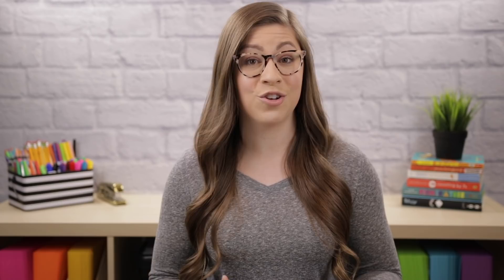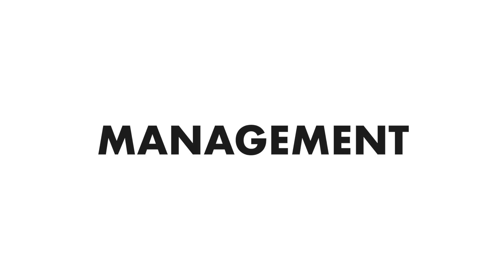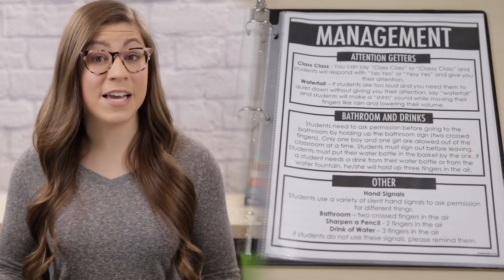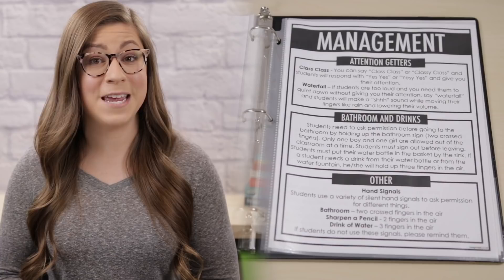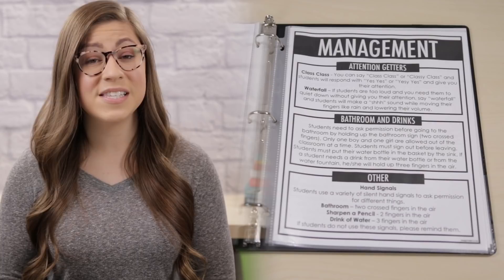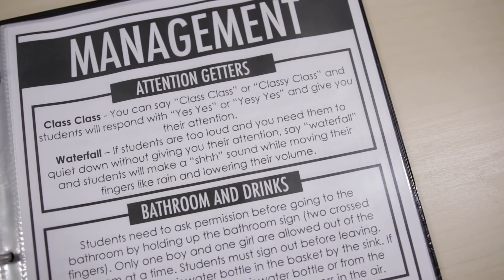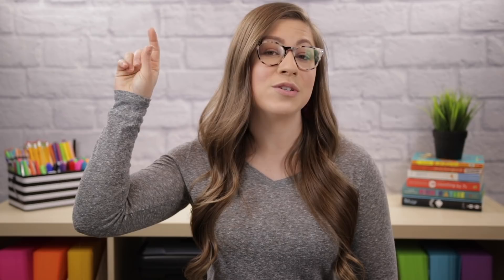The next page is for management. This is where I explain how I handle things like bathroom and getting a drink, and if I have flexible seating, how I manage that in my classroom. It's also helpful to give the substitute attention getters your students are already familiar with — even one or two that students know will help the sub throughout the day. If you utilize specific hand signals in your classroom, explain those to the substitute as well, so they're not confused when students are holding up different fingers or signs to ask for things.